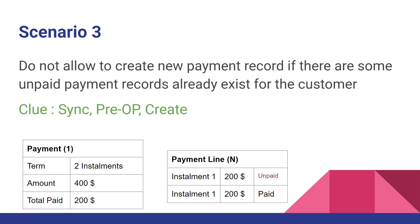The third scenario: do not allow creating new payment records if there are unpaid payment lines already existing for the customer. If a payment record exists with unpaid payment lines, and someone tries to create another payment record, the system should throw an error stating that unpaid payment lines exist for this customer and you cannot create new payments. For this, you register a synchronous plugin in pre-operation of payment record creation that fetches all unpaid payment lines for existing payments of the customer and throws an error if any are found.